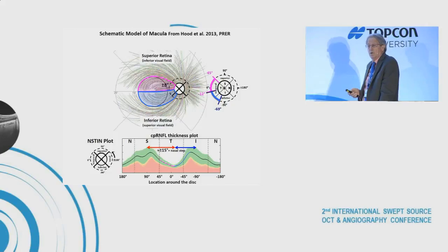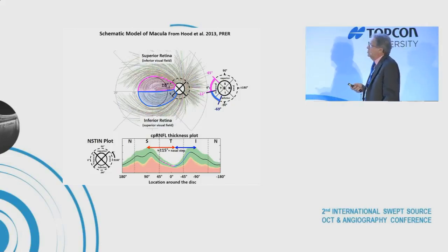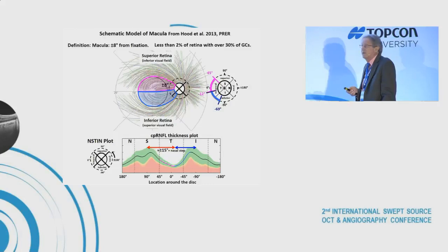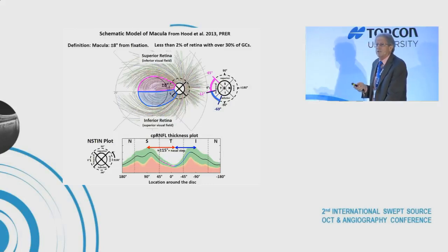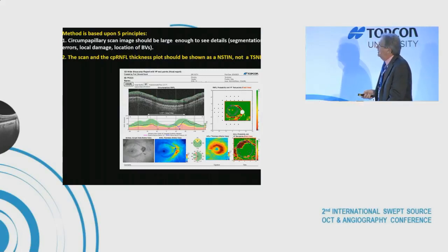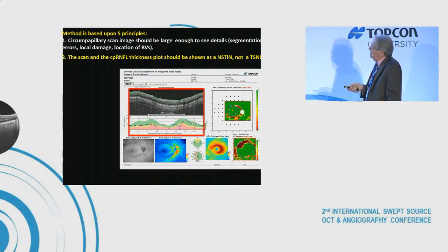We define the macula as plus or minus 8 degrees from fixation. It's the region with the highest density of ganglion cells — less than 2% of the retina but over 30% of the ganglion cells. It's the region needed for reading, driving, and accurate face recognition. Importantly, on average the macula is not simply in the temporal region — it overlaps the inferior region as well.